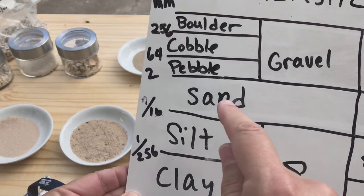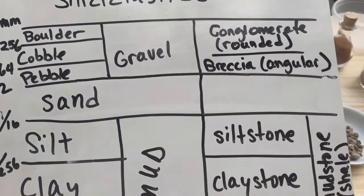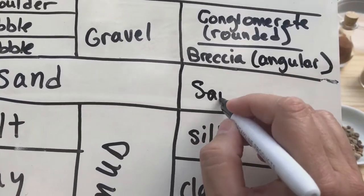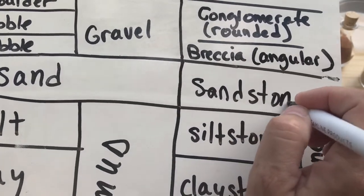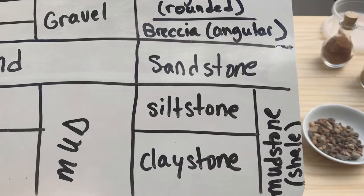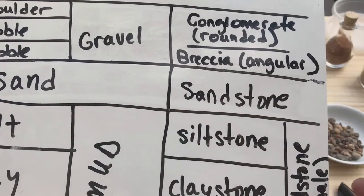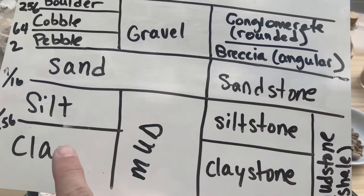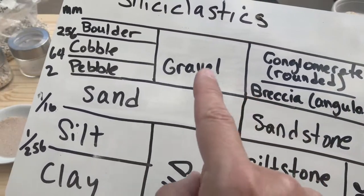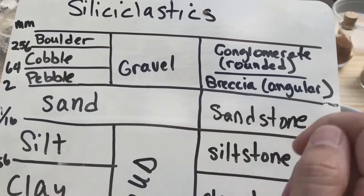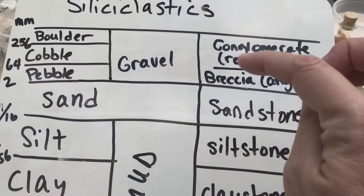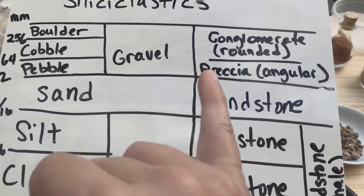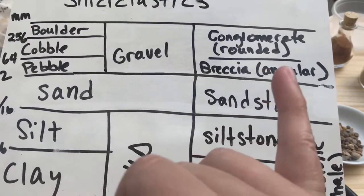A rock composed of sand-size particles is a sandstone. A rock composed of silt-size particles is a siltstone, and clay-size particles make a claystone. The exception is gravel-sized particles: if those particles are rounded it's a conglomerate, but if they're angular it's a breccia — b-r-e-c-c-i-a, pronounced 'breccia.'